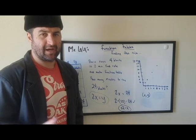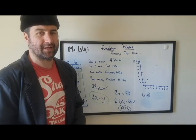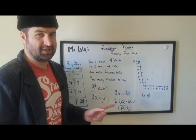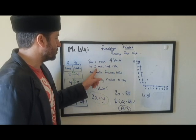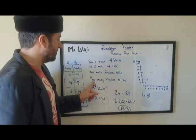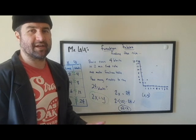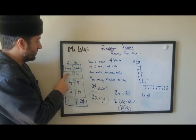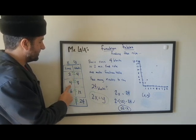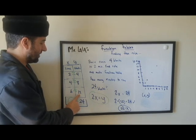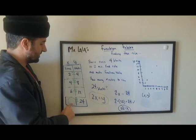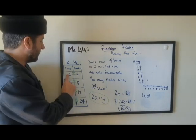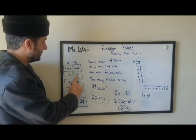Now a word problem in the Russian style. Here we go: Boris runs 4 blocks in 2 minutes — no doubt the KGB is chasing him for stealing a loaf of bread. We want to find the rule and make a function table: how many minutes to run 24 blocks? We take what we know and make a function table. Time: 2 minutes, 4 blocks; 4 minutes, 8 blocks; 6 minutes, 12 blocks. What about 24 blocks — how many minutes? We need to find the rule.